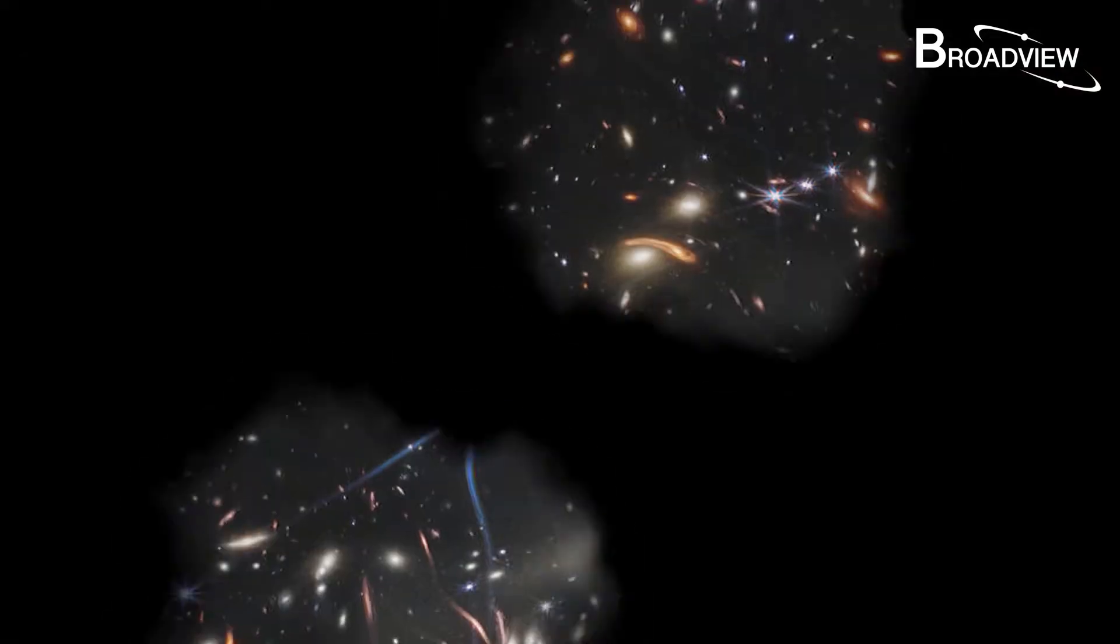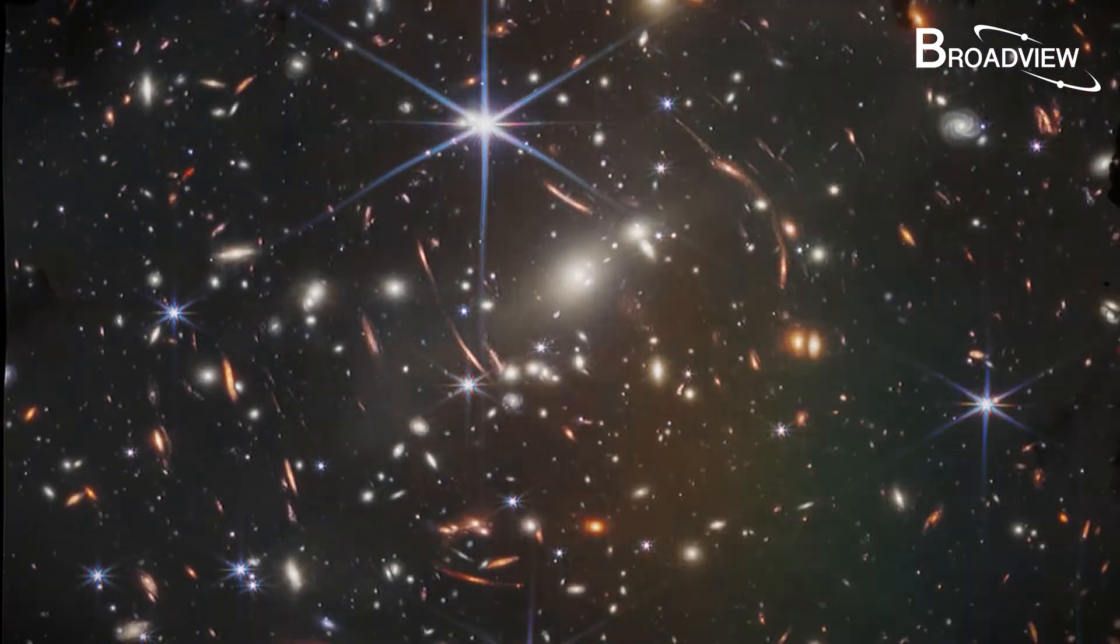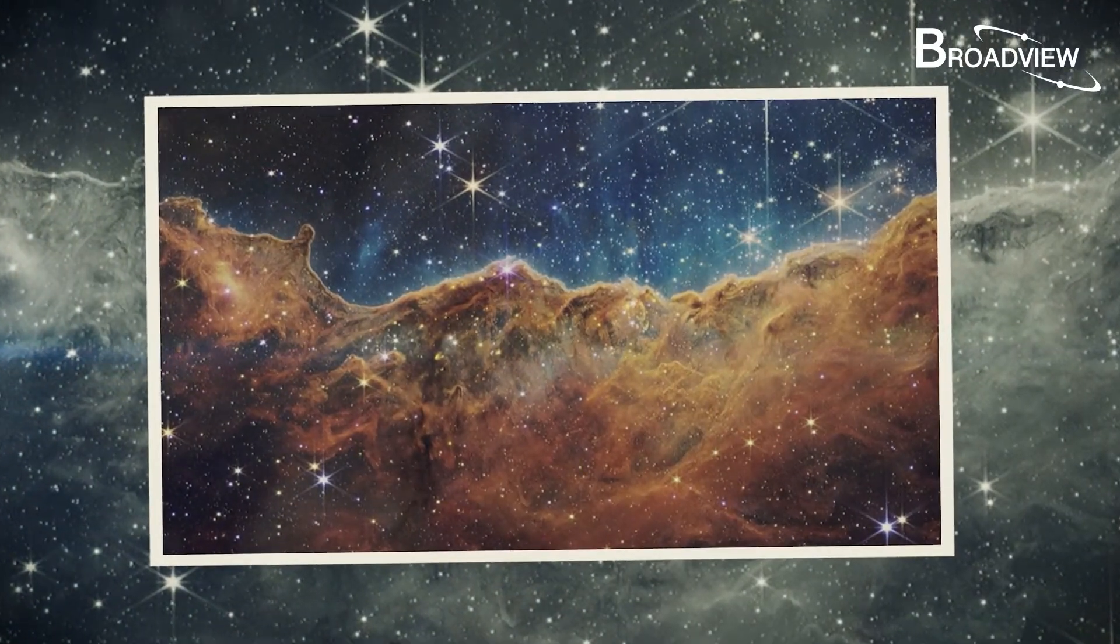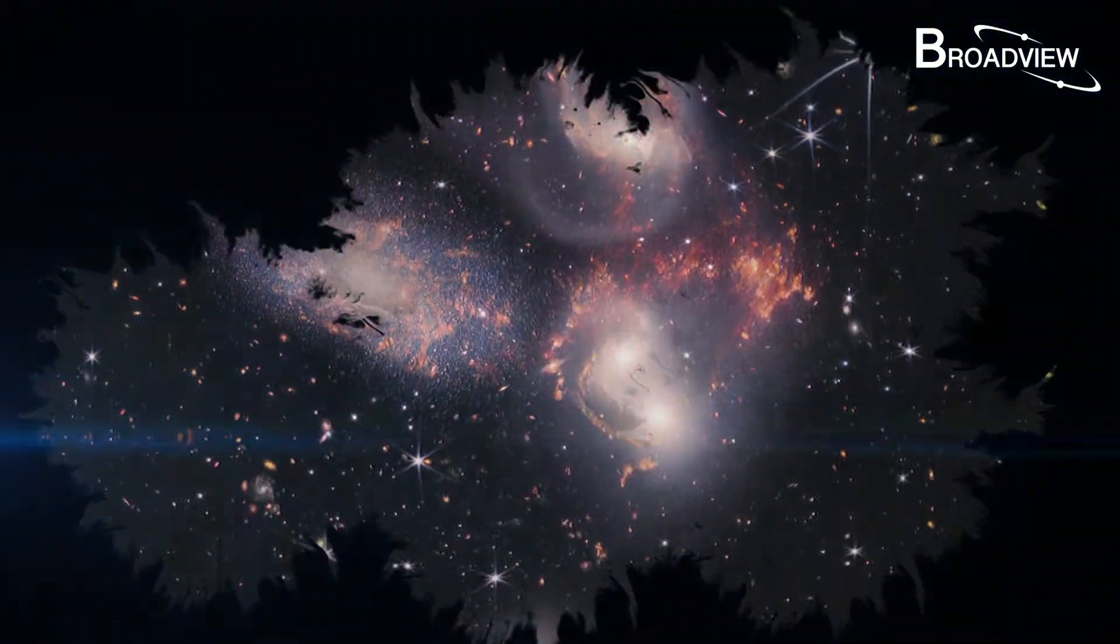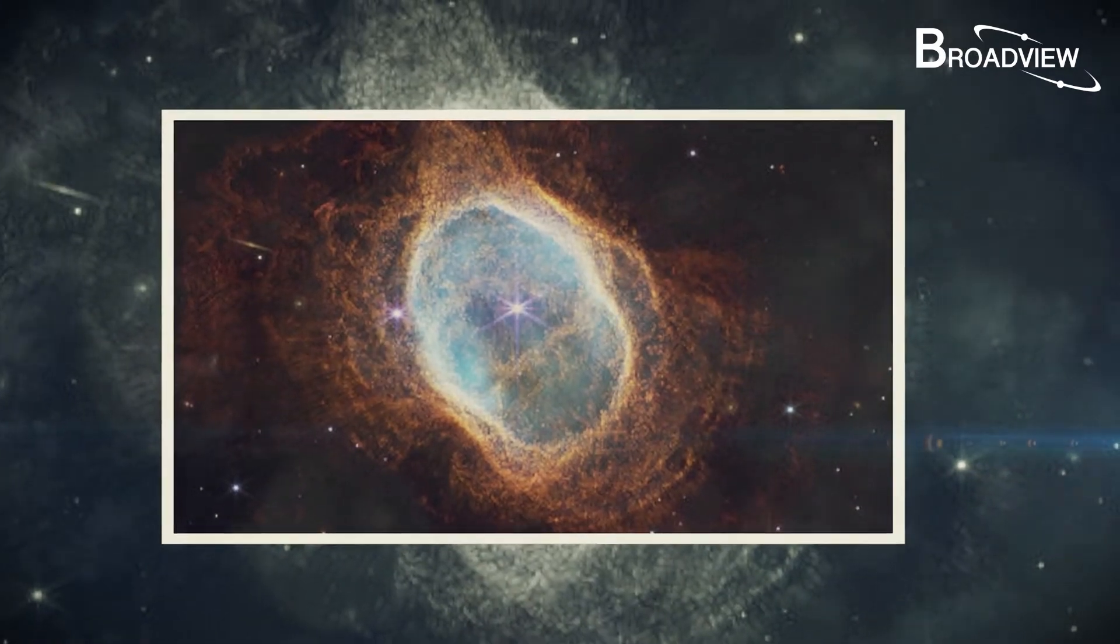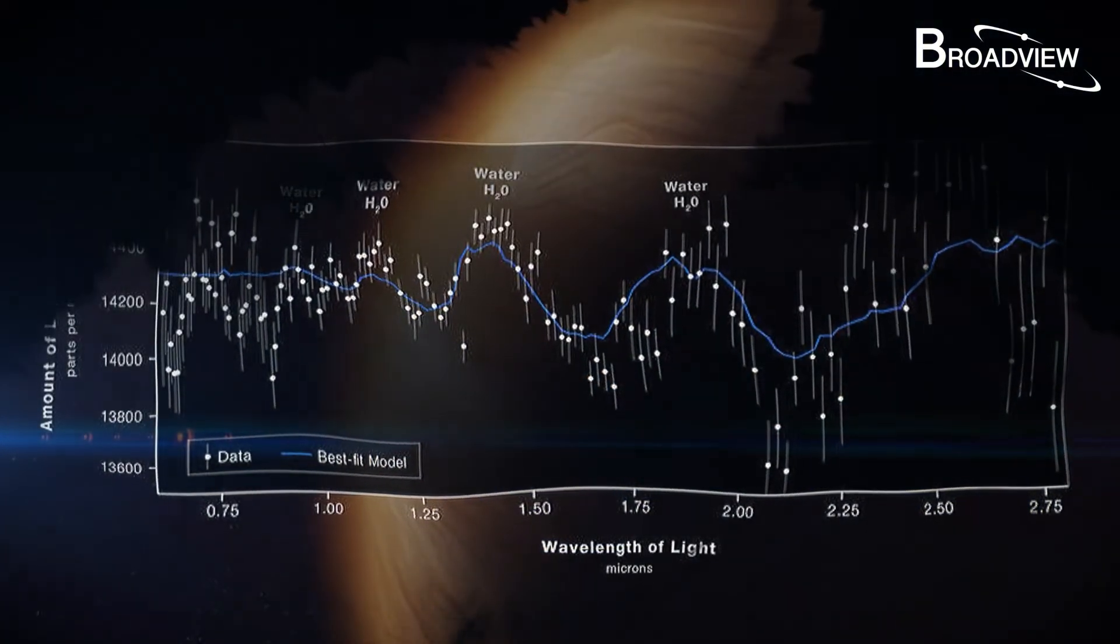On July 12th, James Webb surpassed all previous telescopes with just five photos. It provided data about the birth, growth, formation, and death of stars. It can peer so far into our universe's distant past that it may even discover planets with obvious signs of intelligent life.